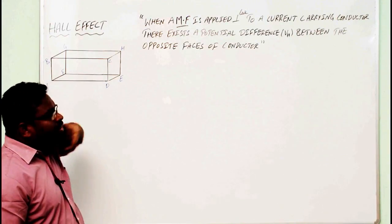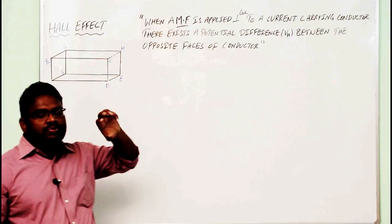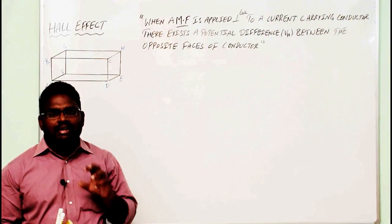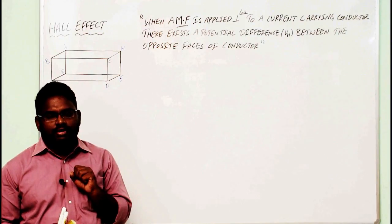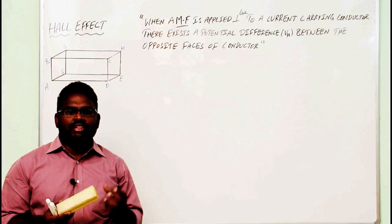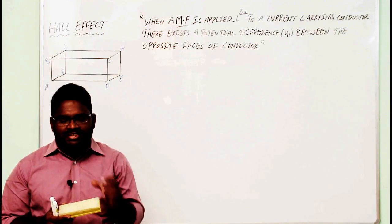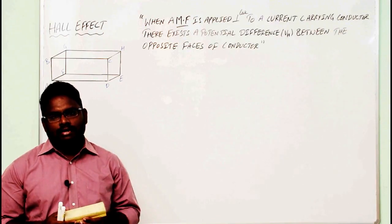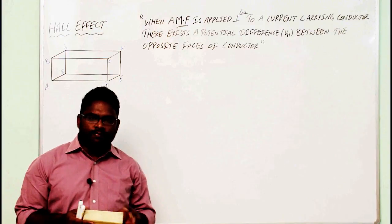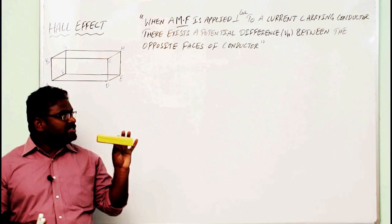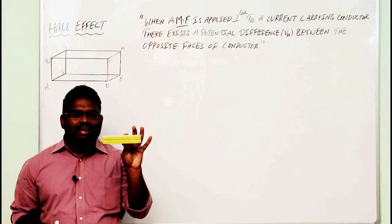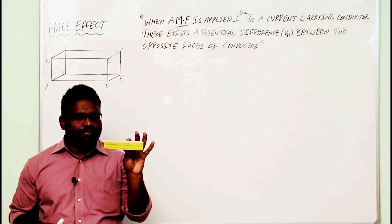The Hall Effect states that when a magnetic field is applied perpendicular to a current-carrying conductor, then there exists a potential difference between the opposite faces of that current-carrying conductor. Potential difference means voltage. To understand this topic, consider a current-carrying conductor in the form of a rectangular shape.